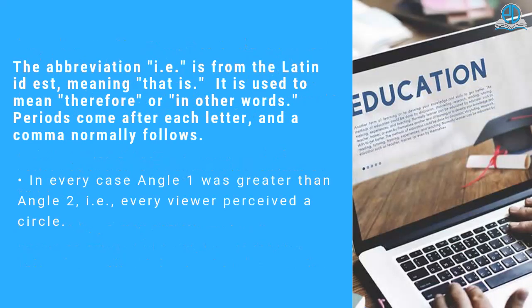The abbreviation i.e. is from the Latin id est, meaning that is. It is used to mean therefore, or in other words. Periods come after each letter, and a comma normally follows.